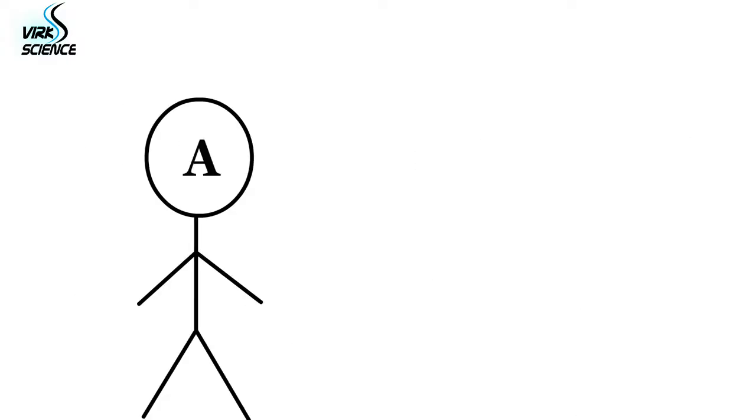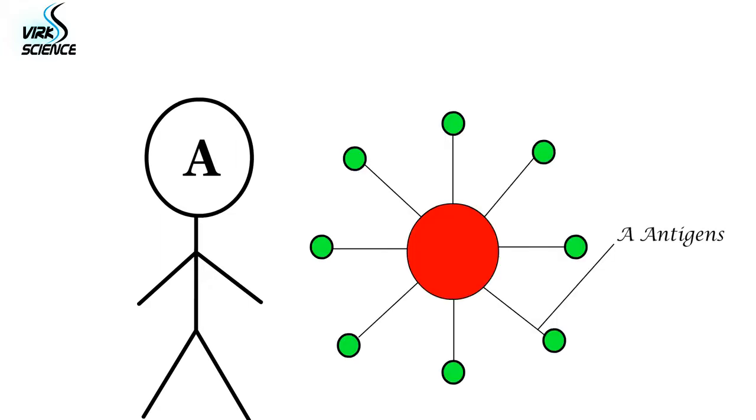If you are type A, your red blood cells have protein attached to them known as A antigens.